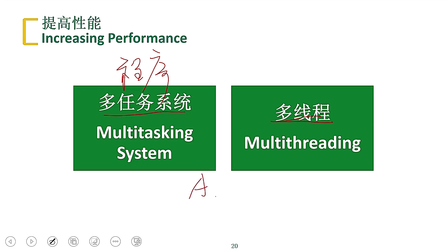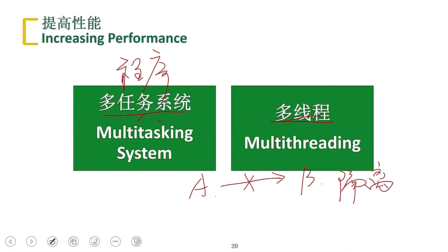Whether it's different programs or the same program, there is a problem when processing different data or files. For example, program A — can it read the data processed by program B? Strictly speaking, no. If program A can directly see the processing of program B, then obviously the confidentiality of B is gone — that's a data leak. So for this kind of multi-system and multithreading processing, we need to find a way to isolate the data, so that program A is only in its own processing space and program B is in its own, and they can't see each other.